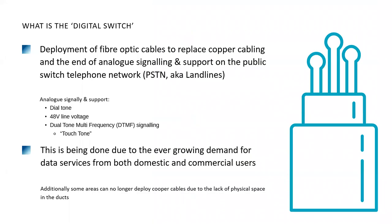The digital switch is the deployment of fiber optic cables to replace existing copper cabling in the network. Today, that copper infrastructure supports key analog signaling technologies: first, there's a dial tone on the line, which units use to check the line is operational before placing a call. Telephone lines also supply 48 volts of line voltage, which some equipment uses to power the emergency telephone itself. Lastly, there's dual tone multi frequency signaling, or DTMF — the tones generated when you press keys on a telephone keypad, also used for legacy machine-to-machine communication.